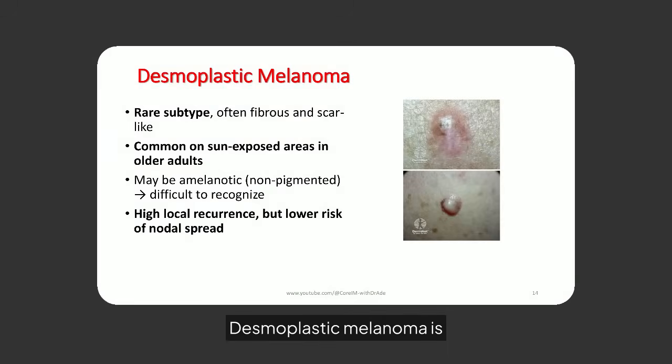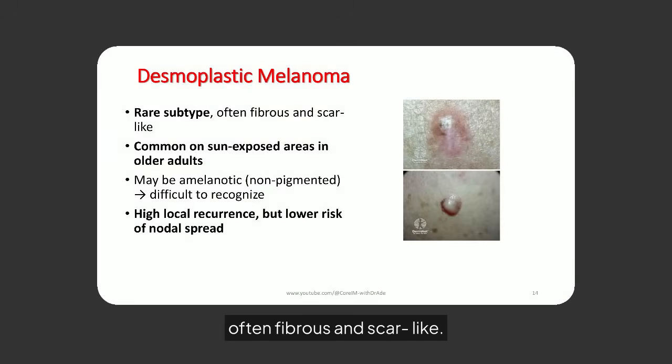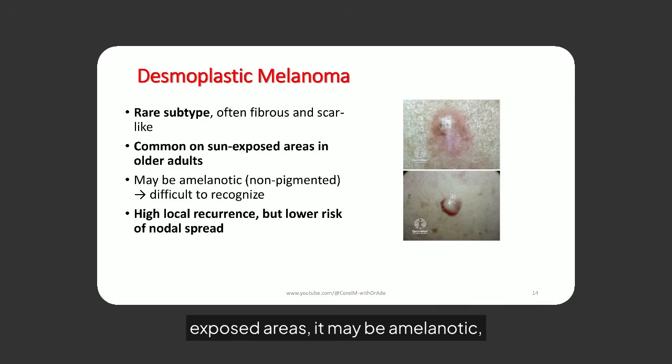Desmoplastic melanoma is a rare subtype, often fibrous and scar-like, common in older adults on sun-exposed areas. It may be amelanotic, making recognition difficult.